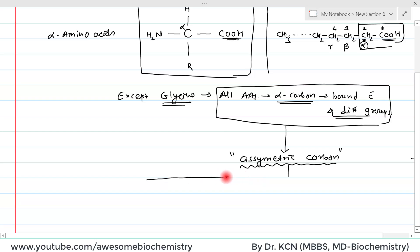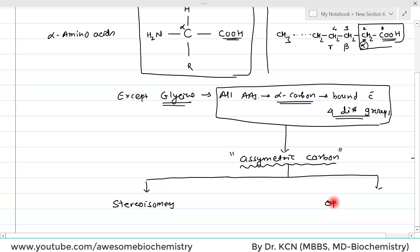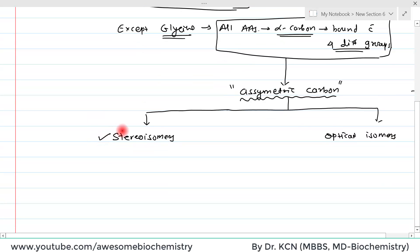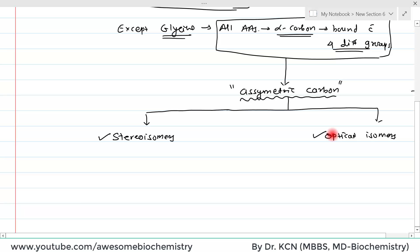So in the case of amino acids also, two types of isomerism are seen: one is stereoisomers and the other is optical isomers. The basic fundamentals of stereoisomerism and optical isomerism have already been covered in a separate video, which you can refer to in the playlist of chemistry of carbohydrates.